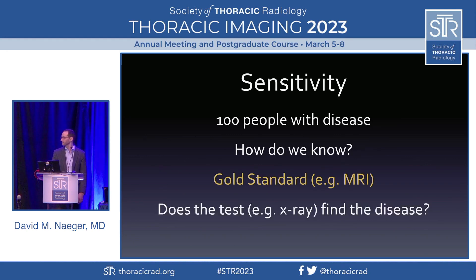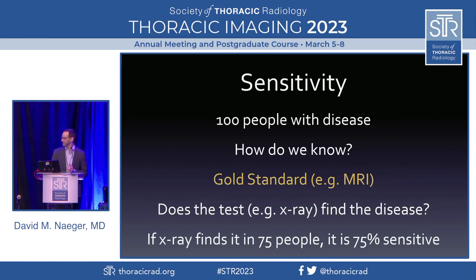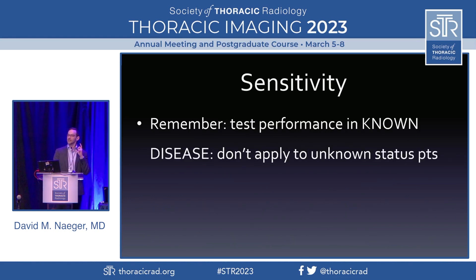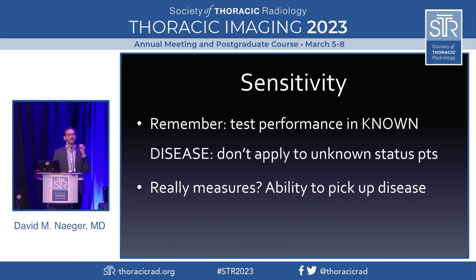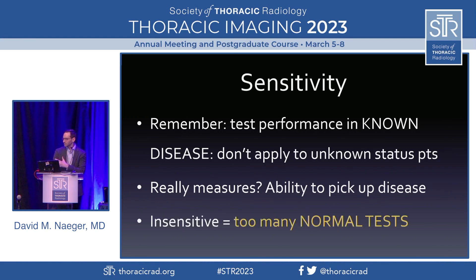To get such a number, you get 100 people who you know have the disease — which means you need a gold standard — and then measure this on an imperfect test, in this case an x-ray. If it finds the fracture in most people, it's 75% sensitive. Again, this is only in people where we already know the answer. We cannot apply sensitivity directly to an unknown patient presenting. Sensitivity is the ability to pick up disease that is there; if it's not sensitive, it turns out normal too much.